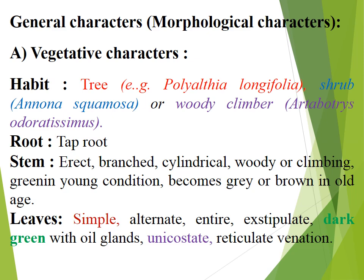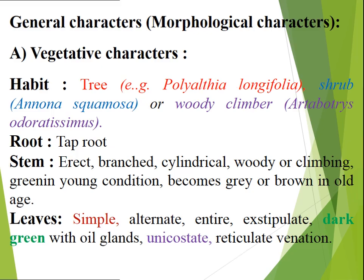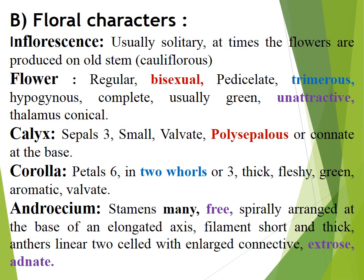Floral characters: Inflorescence — usually solitary; at times flowers are produced on old stems. Flowers — regular, bisexual, pedicellate, trimerous, hypogynous, complete, usually green and unattractive; thalamus conical. Calyx — sepals three, small, valvate, polysepalous or connate at the base. Corolla — petals six in two whorls of three, thick and fleshy, green, aromatic, valvate.